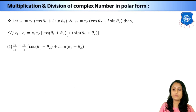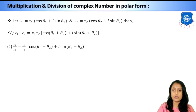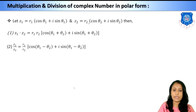Now let's study how to multiply and divide complex numbers in polar form. Consider z₁ = r₁(cos θ₁ + i sin θ₁) and z₂ = r₂(cos θ₂ + i sin θ₂).